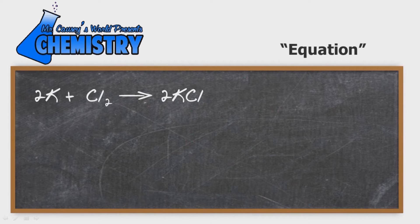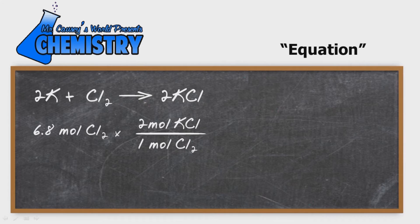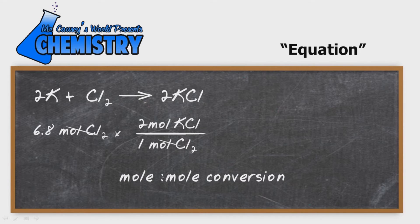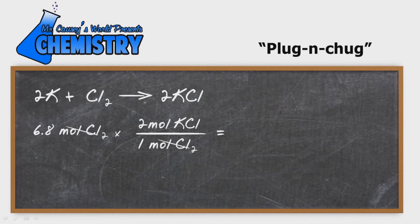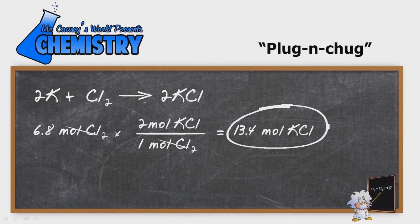So let's write the equation: 6.8 moles of chlorine. And we're going to convert that to moles of potassium chloride. Notice our moles cancel out. So let's plug and chug — just put that into our calculator. We get 13.4 moles of potassium chloride.